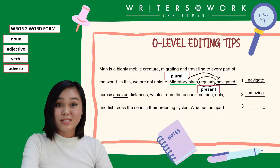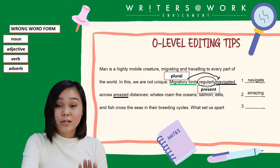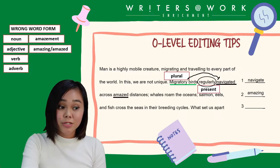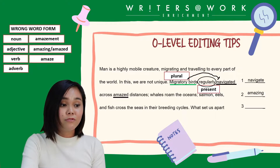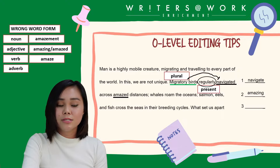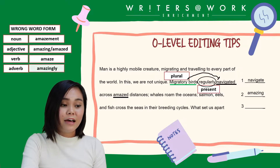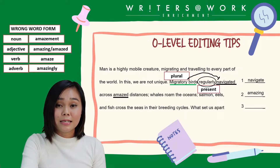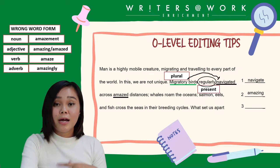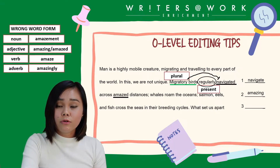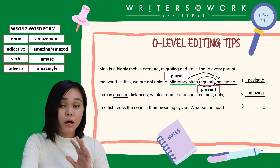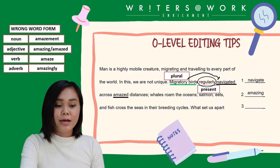So what's the noun form of 'amazing'? That's 'amazement'. And the adverb is 'amazingly'. Practice that skill of changing the word form, because that will really come in handy for your editing.